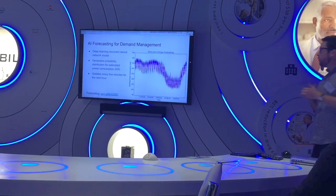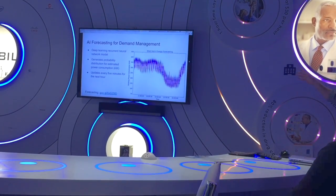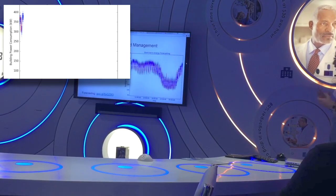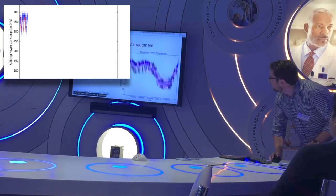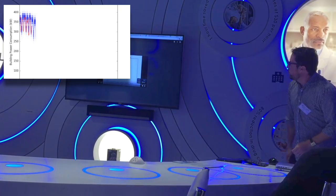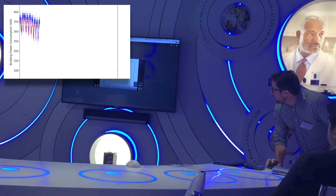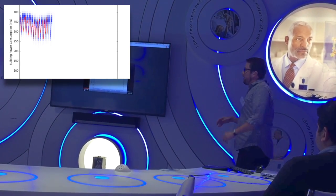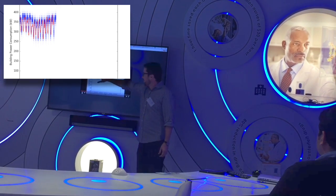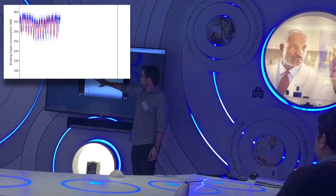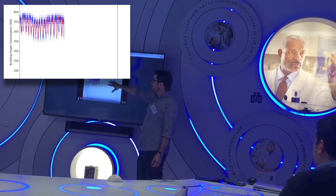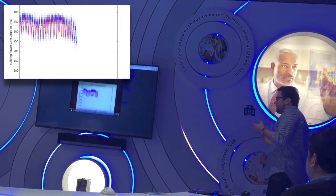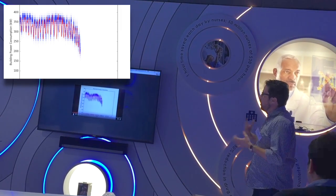So on the forecasting, for those that like machine learning terms, we use a deep learning recurrent neural network model. Essentially what that does is it generates a probability distribution for estimated power consumption and I have a little animation of kind of how that works. What we're doing here is every five minutes we're looking out one hour and we're sort of drawing these blue dots, kind of the probability distribution where we think energy is going to land, and then the red line that's following it is the actual demand. So you can see it's a pretty accurate model, and essentially what we then do is as I mentioned, we compare that to a known threshold.